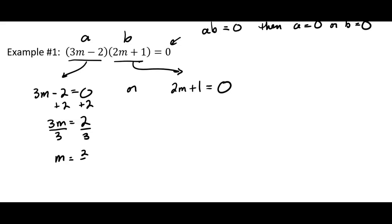And then over here, subtract one from both sides, divide both sides by two, and so m equals negative one-half. Now a lot of textbooks will want you to write it—you have two answers: one answer is two-thirds and the other answer is negative one-half.